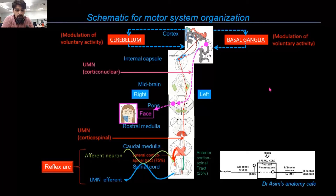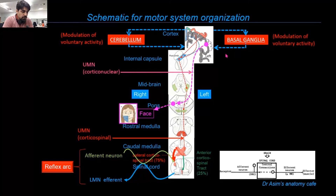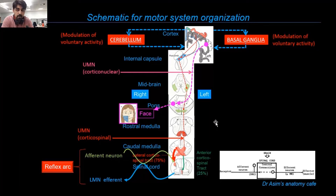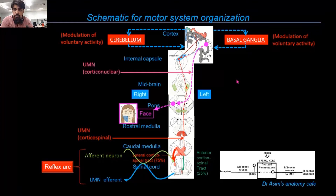There are other components of the motor system as well — the cerebellum and the basal ganglia — which are connected to the cerebral cortex through neuronal loops. Notably, they don't have direct access to the reflex arc; they affect it indirectly by modulating the activity of the cerebral cortex. A lesion in the cerebral cortex or upper/lower motor neuron pathways causes paralysis, but a lesion in the basal ganglia or cerebellum won't cause total paralysis. Instead, there will be impairment of coordination of motor activity — such as tremors, rigidity, or impaired motor coordination.